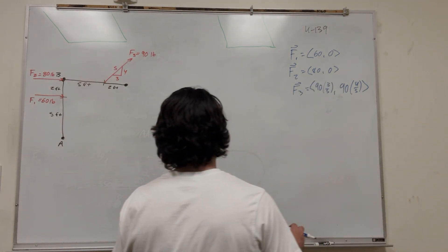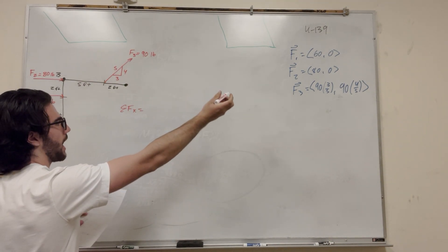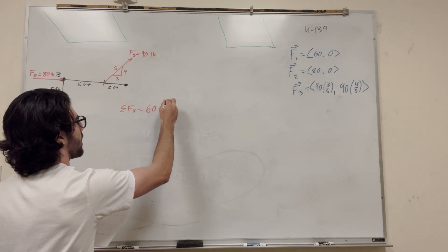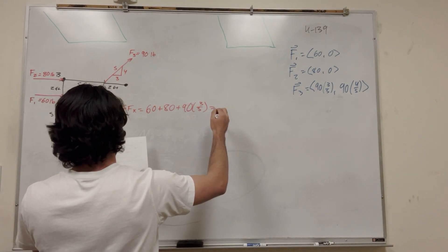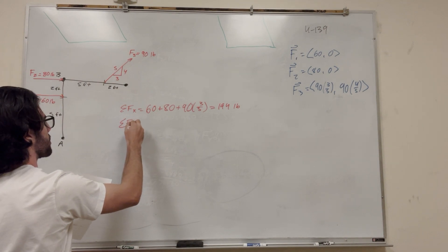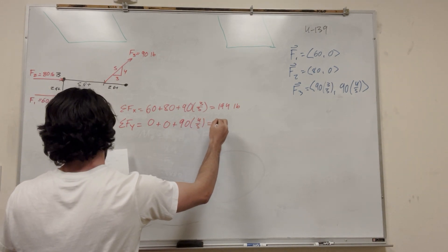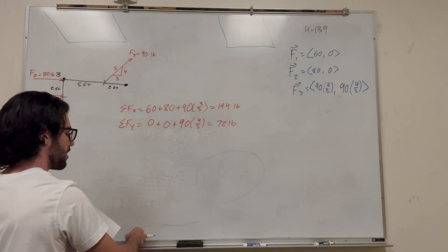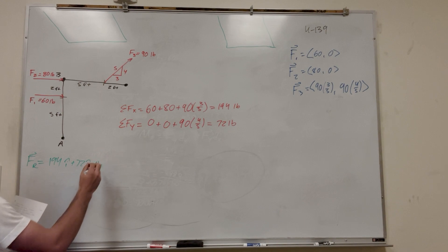So let's go ahead and find the resultant force. To find the resultant force, we're going to take the sum of the forces in each direction. So let's start with x, sum of the forces in the x. We're just going to add all the x's together. So it'll be 60 plus 80 plus 90 times 3 fifths. And this force x is 194. Nice. Let's take sum of the forces in the y this time. So 0 plus 0 plus 90 times 4 fifths. And then that's just going to be 72 pounds.